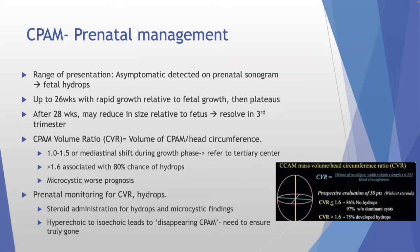The CPAM can become hyperechoic then isoechoic — the 'disappearing CPAM' — which is why it may still be present despite not showing on ultrasound. For treatment at 28 weeks: if CVR is greater than 1.6, or less than 1.6 but with hydrops, give steroids. You can attempt cyst decompression by aspiration or shunting. If CVR doesn't improve and hydrops progresses, open fetal surgery is considered.